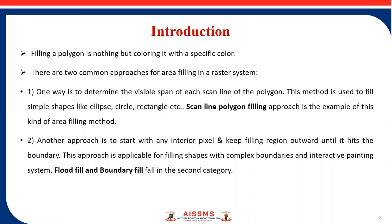Most of the graphics packages provide area filling primitives. There are two common approaches for area filling in a raster system. One way is to determine the visible span of each scanline of the polygon — this method is used to fill simple shapes like ellipse, circle, rectangle, etc. Scanline Polygon Filling is an example of this kind. Another approach is to start with any interior pixel and keep filling the region outward until it hits the boundary, which is applicable for filling shapes with complex boundaries and interactive painting systems. Flood fill and boundary fill fall in this category.